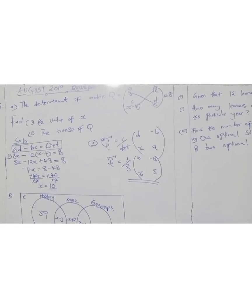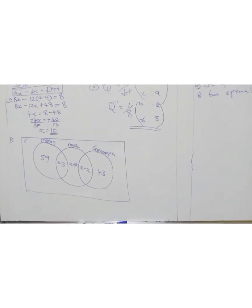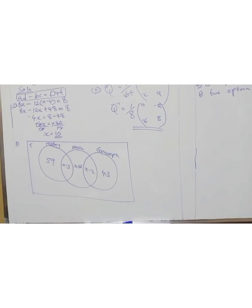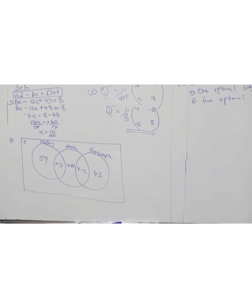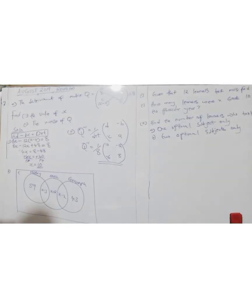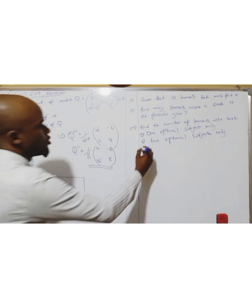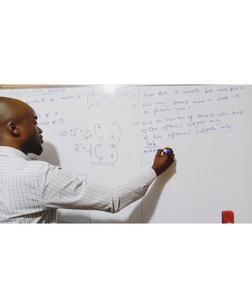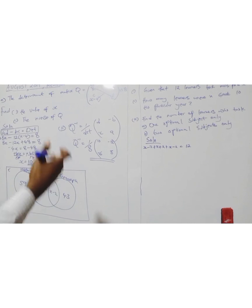Now question B2. It says — if you look at your past paper August 2019 — the Venn diagram below shows the optional subjects that all grade 10 learners at Kasambulila Secondary School took in a particular year. This is a Venn diagram. You will always be given sets in section A. We are told that 12 learners took music. Find x. Solution: in the set for music, we have x minus 3, plus x plus 2, plus x minus 2, and we are told this equals 12.